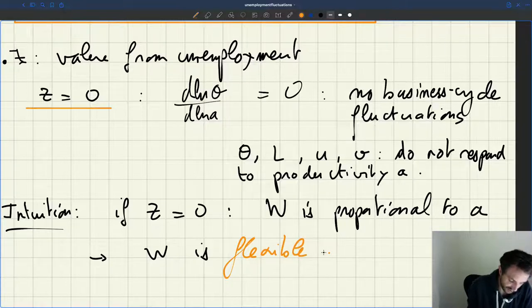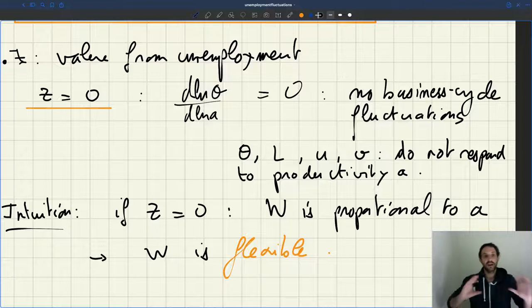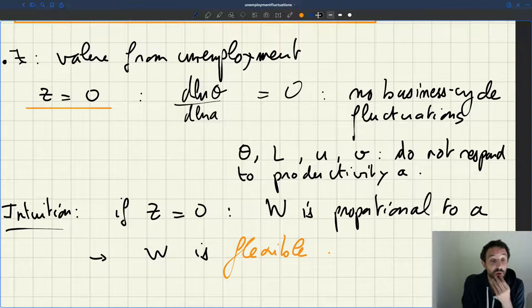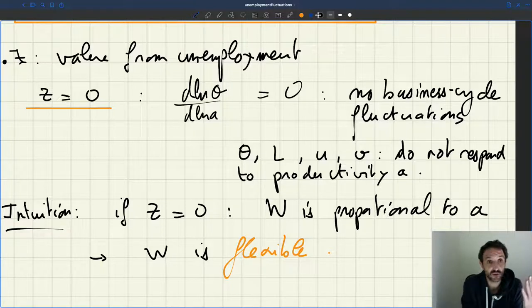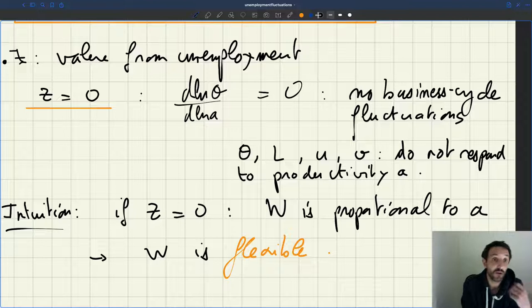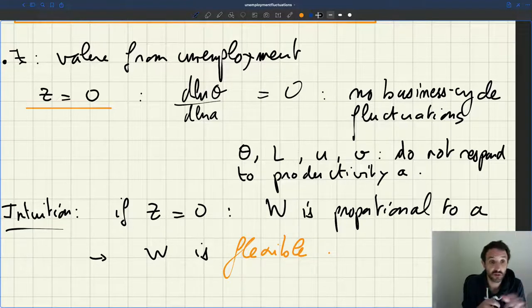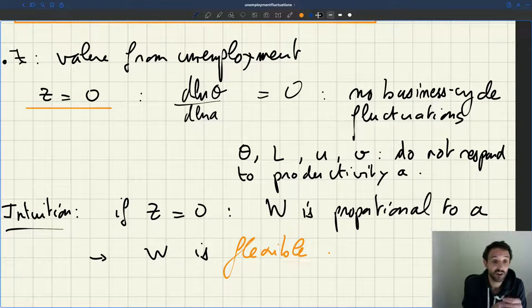W is proportional to A, the labor productivity, so it means that W is what we call flexible. In a world like this, where your wage is flexible, anytime your labor productivity goes up, firms would think, okay, I have workers who are more productive, I would be happy to expand the size of my firm, but the wage also goes up one to one with that increase in productivity. So whatever extra profits the firm were anticipating from higher productivity, they are absorbed by the increase in wages exactly, so that at the end, the profitability from a worker is not changing at all.